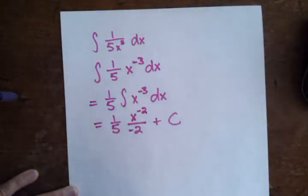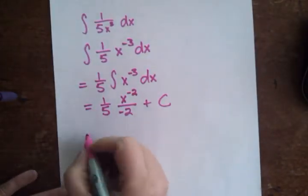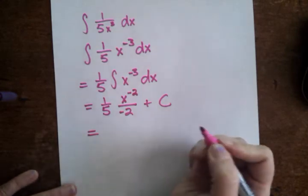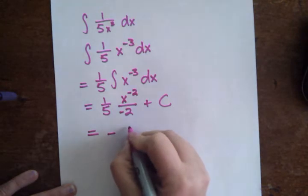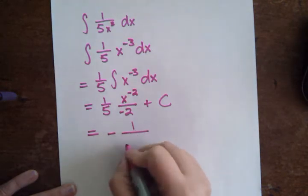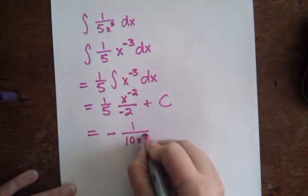And honestly, this answer, well, plus our constant of integration. I don't want to forget that. We can simplify that if you want to. That's going to give you negative, let's see, 1 over 10x squared.